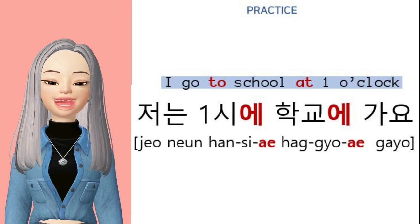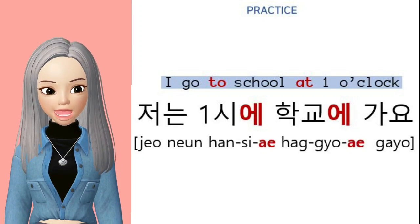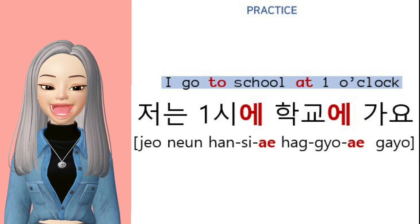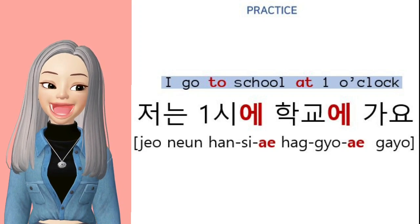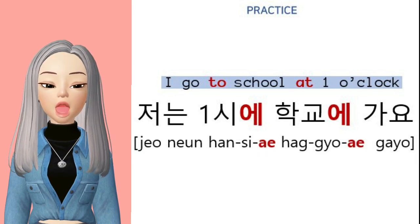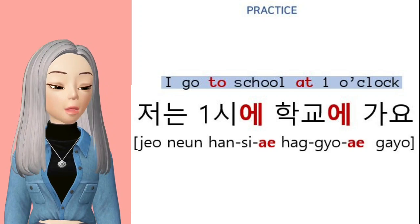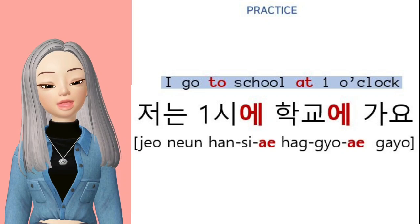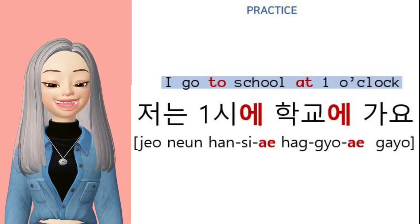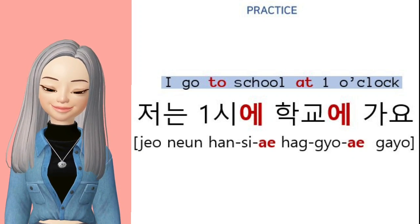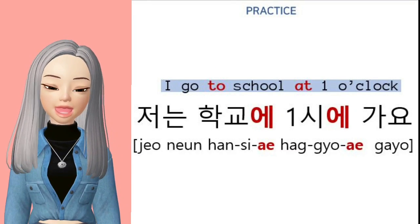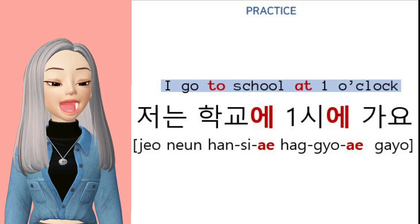We're going to put both 'at' and 'to' in one sentence, and remember both are going to use 에. Let's try: 'I go to school at 1 o'clock' — 저는 한 시에 학교에 가요. See, we used two 에's in one sentence — that is still possible. You can also switch the order of the time and the place: 저는 학교에 한 시에 가요.